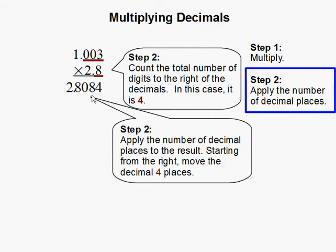So 1, 2, 3, 4. And therefore, our answer is 2.8084. This completes our problem.